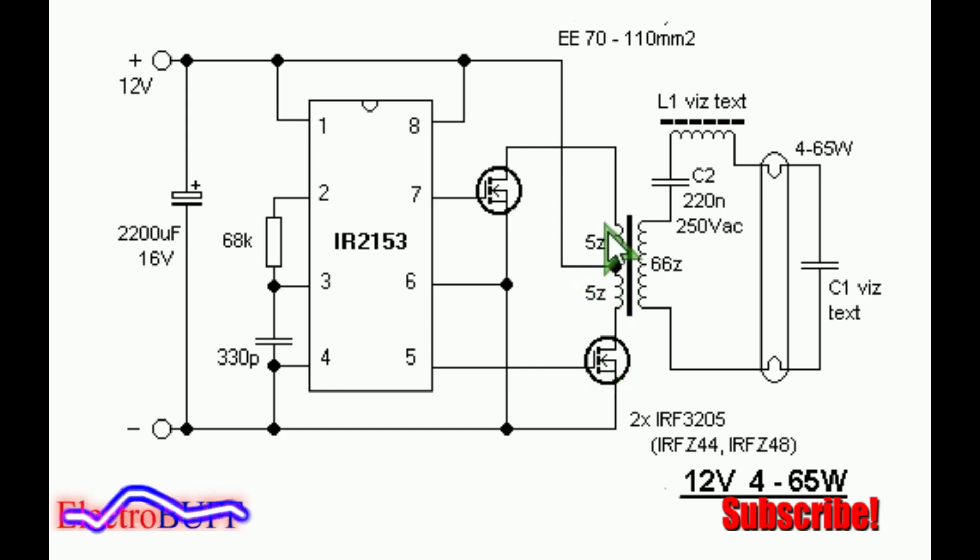The turns ratio are shown. It's 5 turns on each half primary winding and about 66 on the secondary winding. This makes a transformation ratio of about 13.